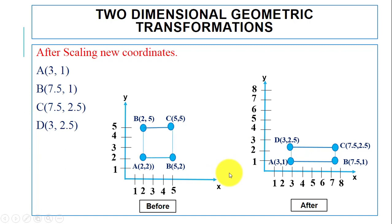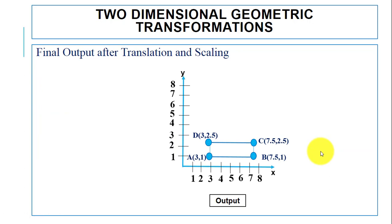This is the final position of the square after first applying translation and then scaling. Scaling means we can change the size of the object — you can either compress it or expand it. So that's how you perform translation and scaling operations: translation moves the object on the screen and scaling changes its size. Thanks for watching, and if you have any questions you can comment below.